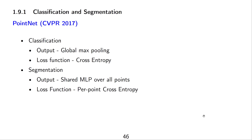Classification and segmentation were both addressed in the original PointNet paper. For classification, the output was generated using global max pooling and the loss function cross entropy. For segmentation, the output was generated by a shared MLP over all points and the loss function was per-point cross entropy.